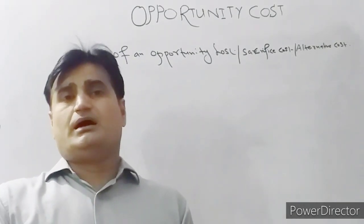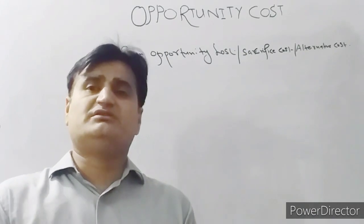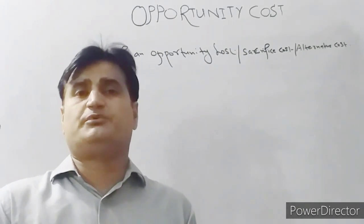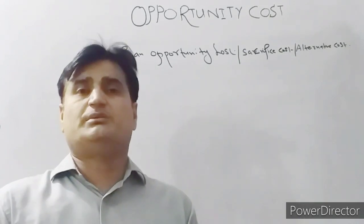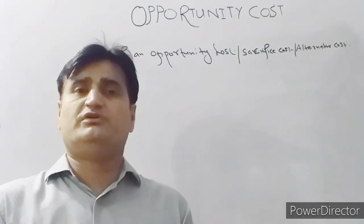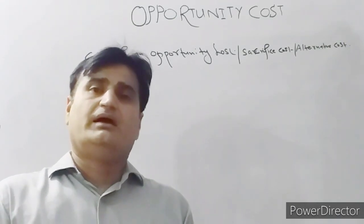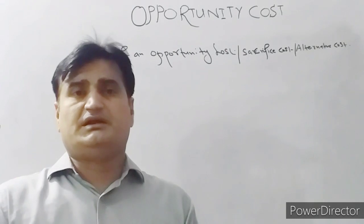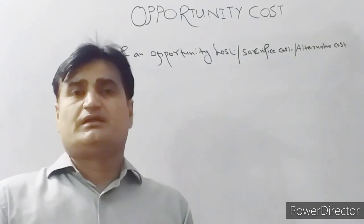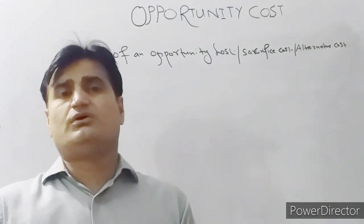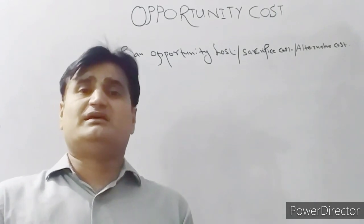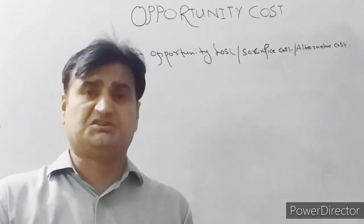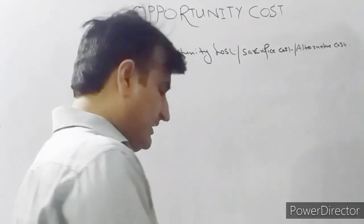When a businessman produces one commodity, he is not producing another commodity. So the benefit that could be earned by producing commodity B has been sacrificed. And when an exporter exports something out of a country, it means he lost the revenue that could be earned from the local market. So opportunity cost plays a major role while making a decision.